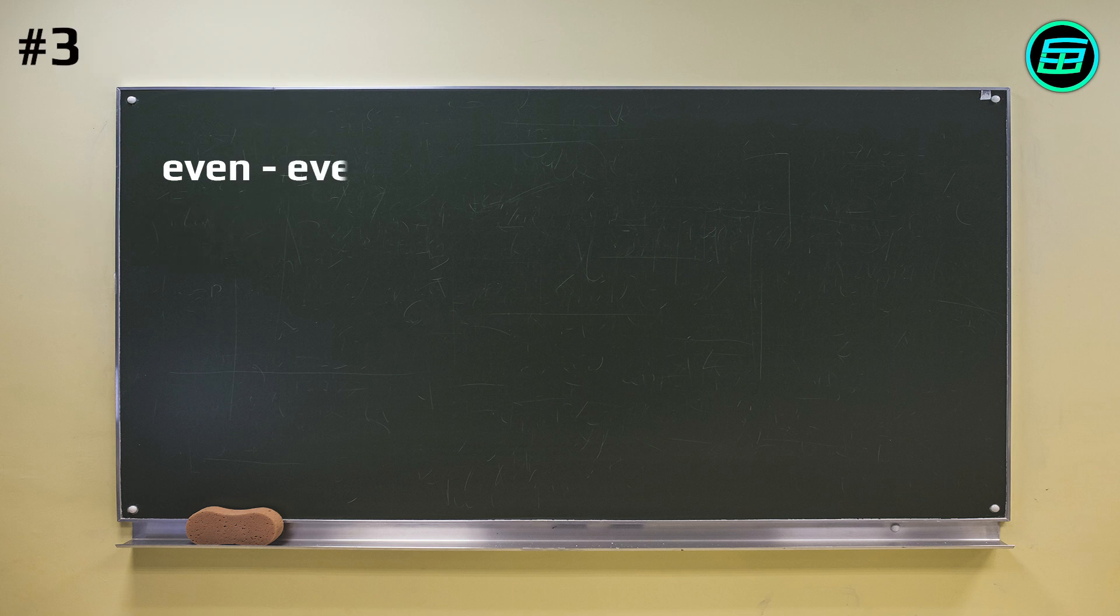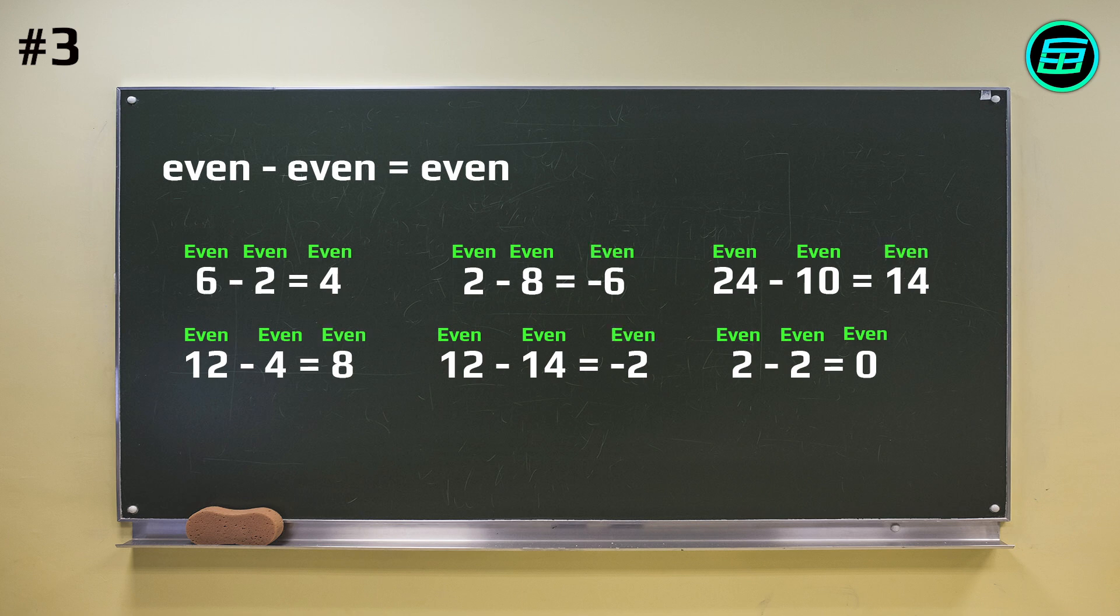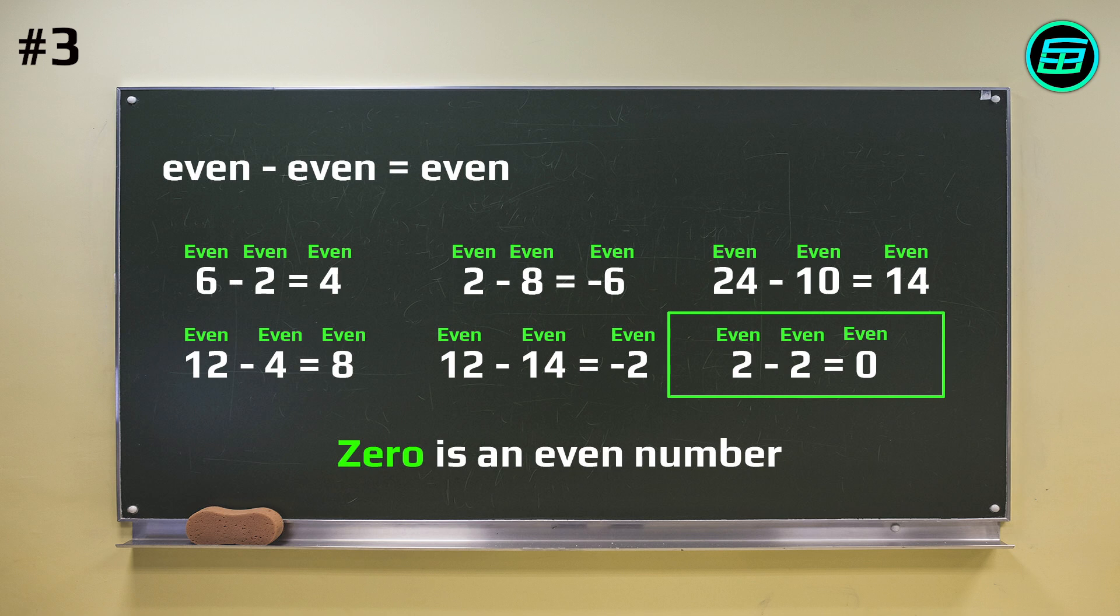If we subtract two even numbers, the result will always be an even number. Again, 0 is an even number.